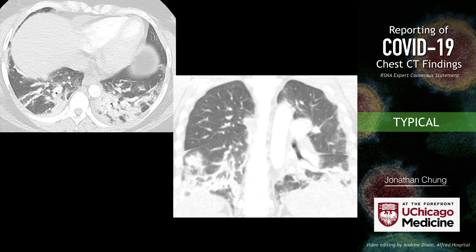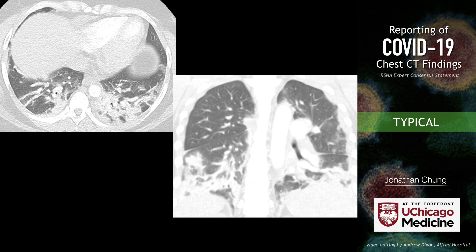I've now seen perilobular consolidation in at least a couple of cases of COVID-19. Here's a patient with COVID-19 pneumonia. We see basilar predominant consolidation with a suggestion of perilobular consolidation and some central lobular sparing. When you have consolidation demarcating the outside of secondary pulmonary lobules at the lung bases, you should be thinking about organized pneumonia. With the high pretest probability of COVID-19, this is something you should be thinking about very highly.